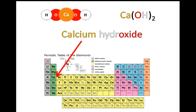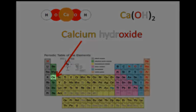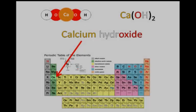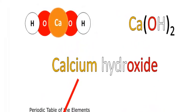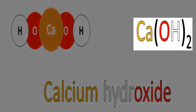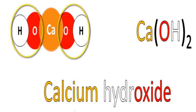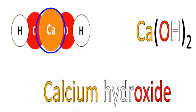Calcium hydroxide is also a base. Calcium is a metal — it's also an alkaline earth metal in group 2, just like magnesium. It also bonds with hydroxide in a ratio of 1 calcium to 2 hydroxides: Ca(OH)₂.